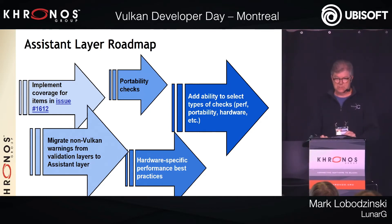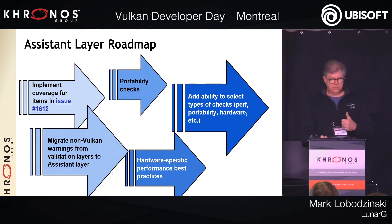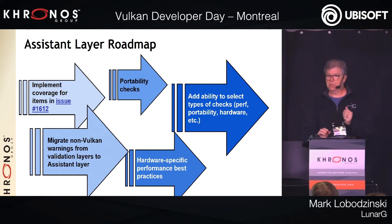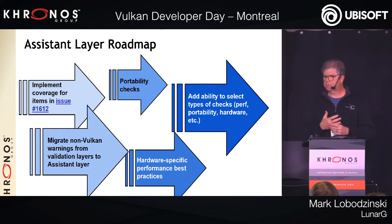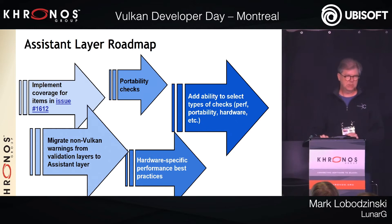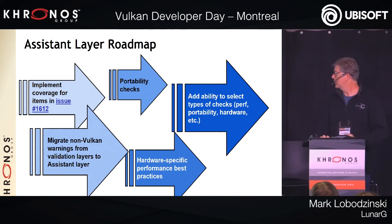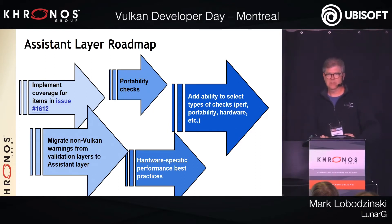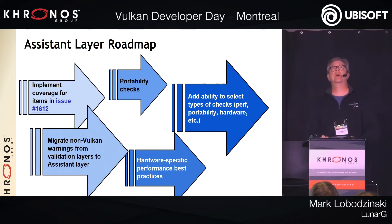Another suggestion we've had is that different IHV platforms could have different performance requirements, so it would be easy to have plug-in layers for different hardware platforms that you could plug in and get suggestions or notifications that you're violating best practices on that particular hardware. Another thing is being able to switch these checks on and off.